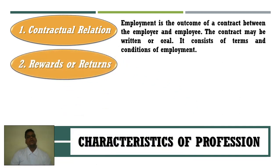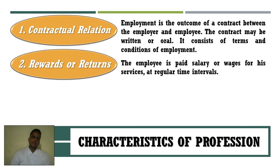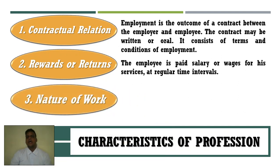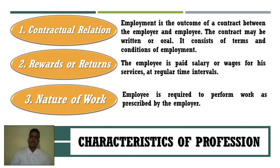Point number 2 is Reward or Return. For employees, the return or reward is their salary or wages, received at regular intervals. Salaries are paid monthly, while wages are paid on a day-to-day basis. Point 3 is Nature of Work — employees ultimately perform the tasks which are assigned by the employer.